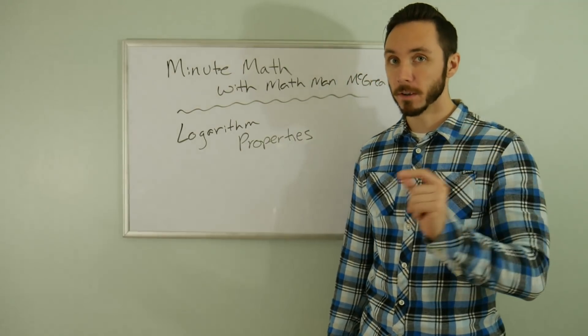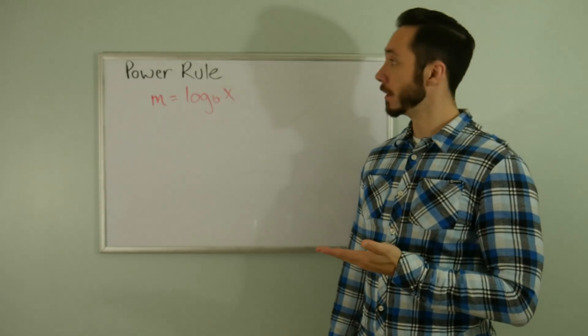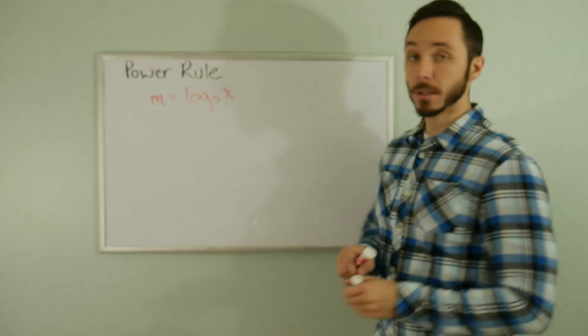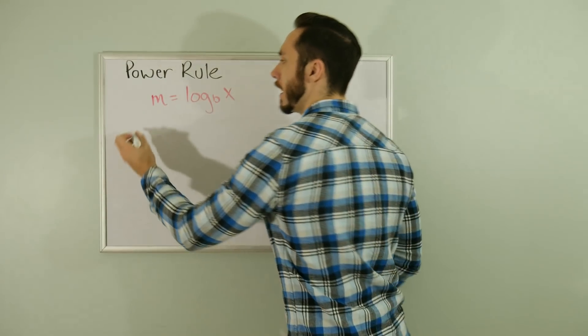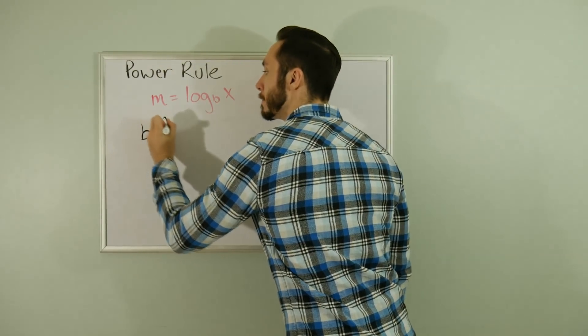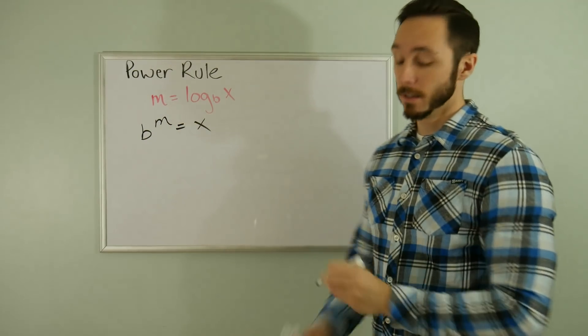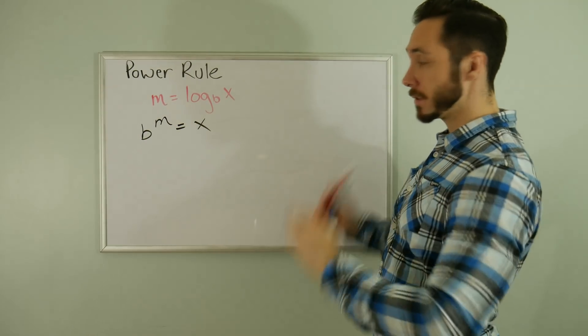Let's start with the power rule. Here I have M = log base B of X. Using the definition of a log, I can rewrite this statement as B to the power of M equals X.